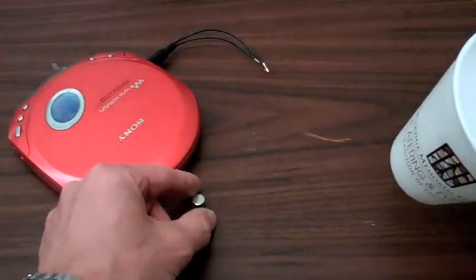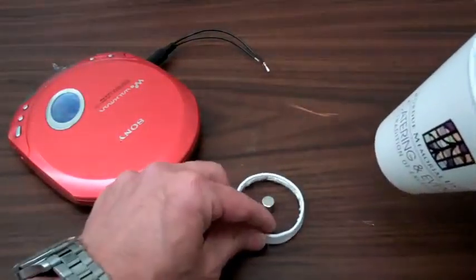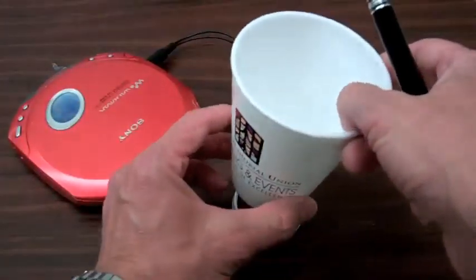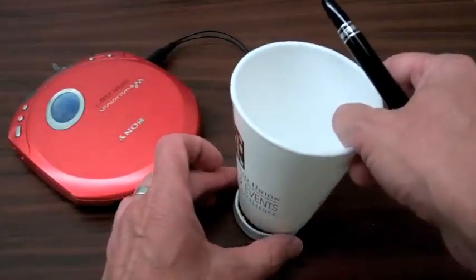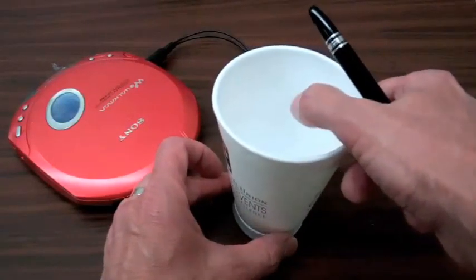So our permanent magnet is going to sit on the table here, and I have a spacer to hold the cup above and in close proximity to the permanent magnet, so the coil is very close to that permanent magnet.